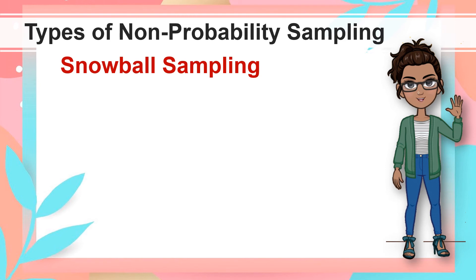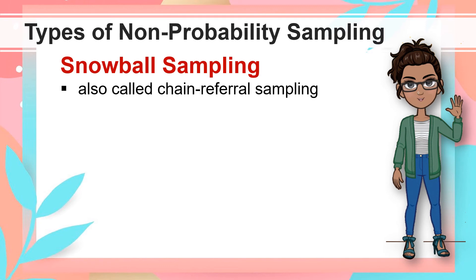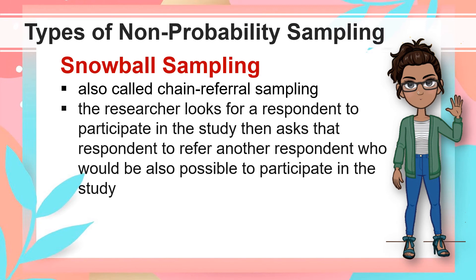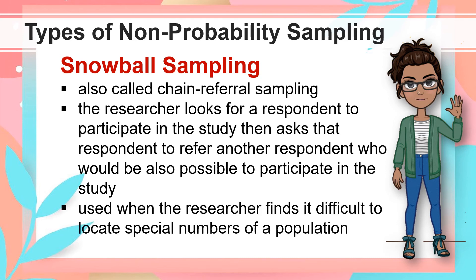The fourth type of non-probability sampling is Snowball Sampling, also called Chain Referral Sampling. It is a sampling technique wherein the researcher looks for a respondent to participate in their study, then asks that respondent to refer another respondent who would also be possible to participate in the study. This is used when the researcher finds it difficult to locate special members of a population.